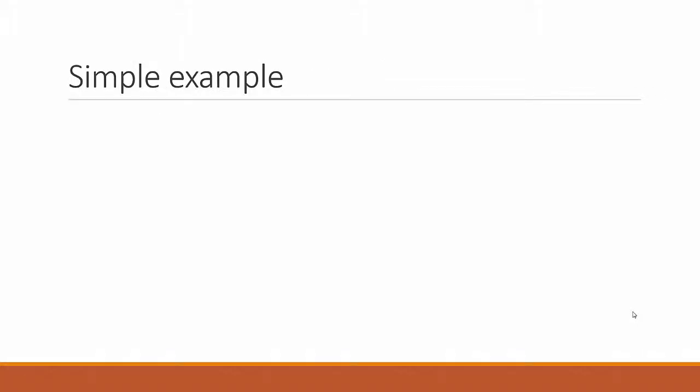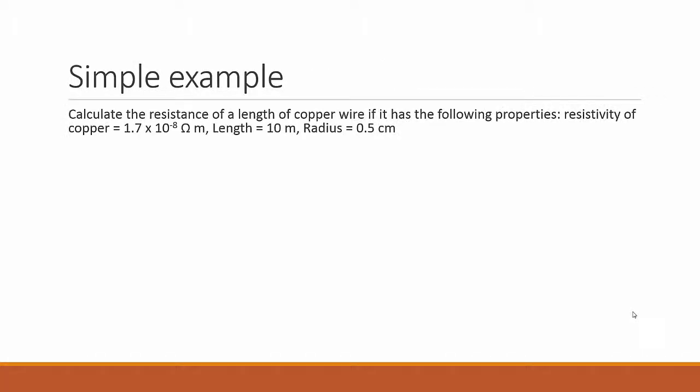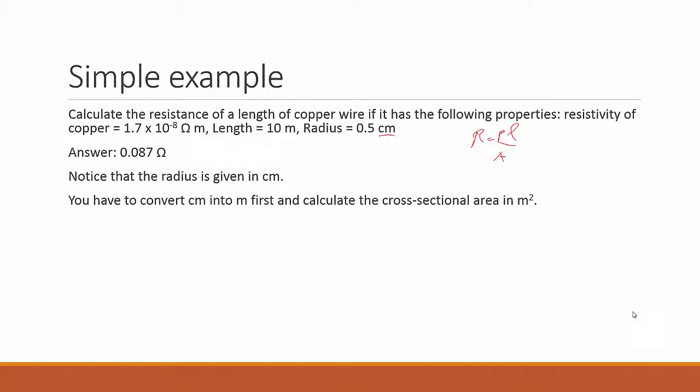Let's use a simple example. Calculate the resistance of the length of copper wire if it has the following properties. Pause the video and try to work out using the formula R equals ρL over A. Do you get the answer? If you didn't get an answer, notice that the radius given is in centimeters. So you have to convert centimeter into meters first, and then calculate the cross sectional area in meter square. And in this case we are assuming it's a circle, so it's πr².